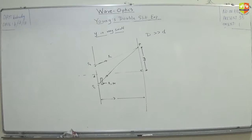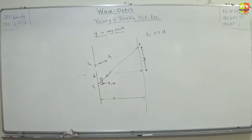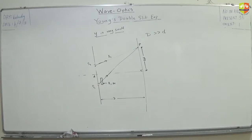What is the definition of central maxima? What is the path difference? Path difference is zero. So find out the path difference as a function of y, D, and t.